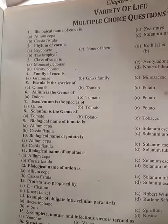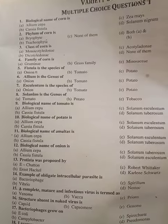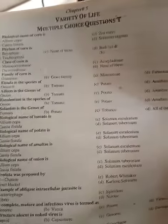Question number 7: esculentum is the species of tomato. Question number 8: solenum is the genus of potato.